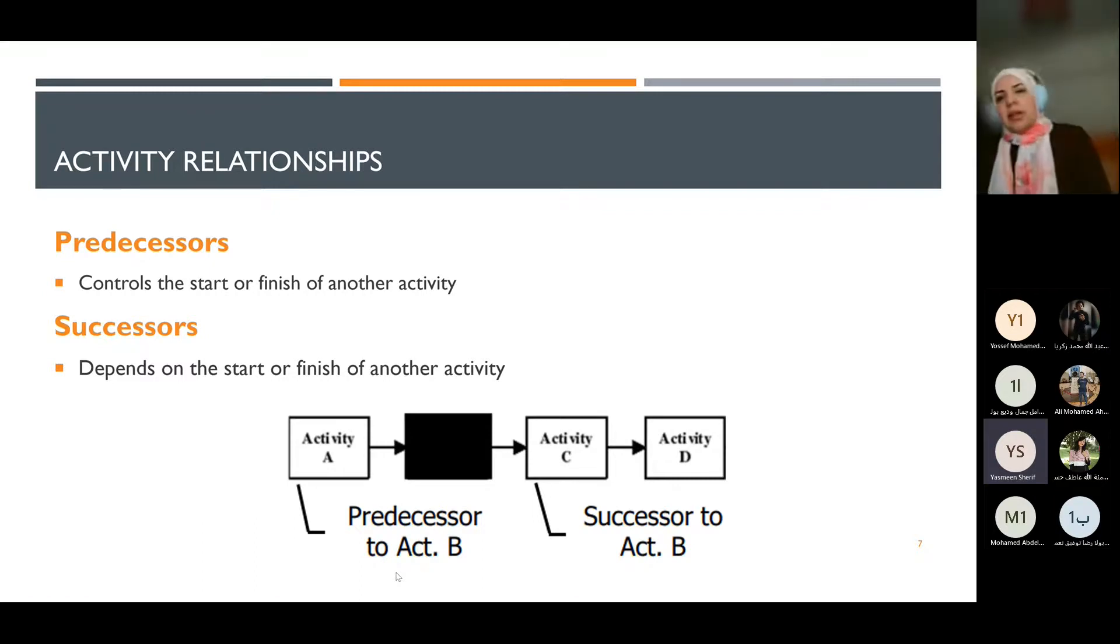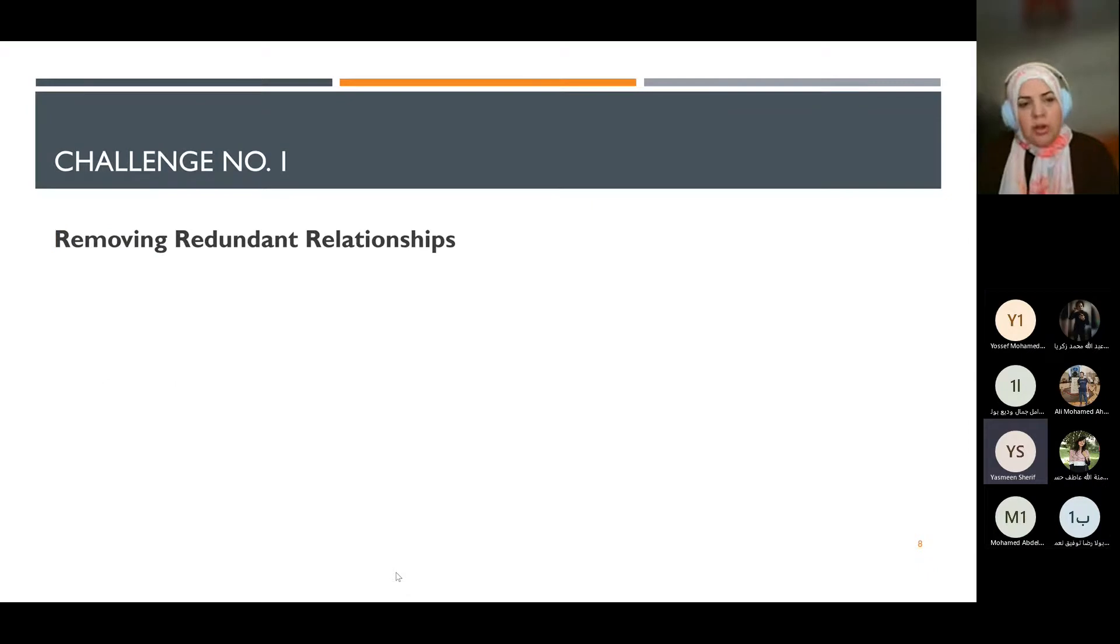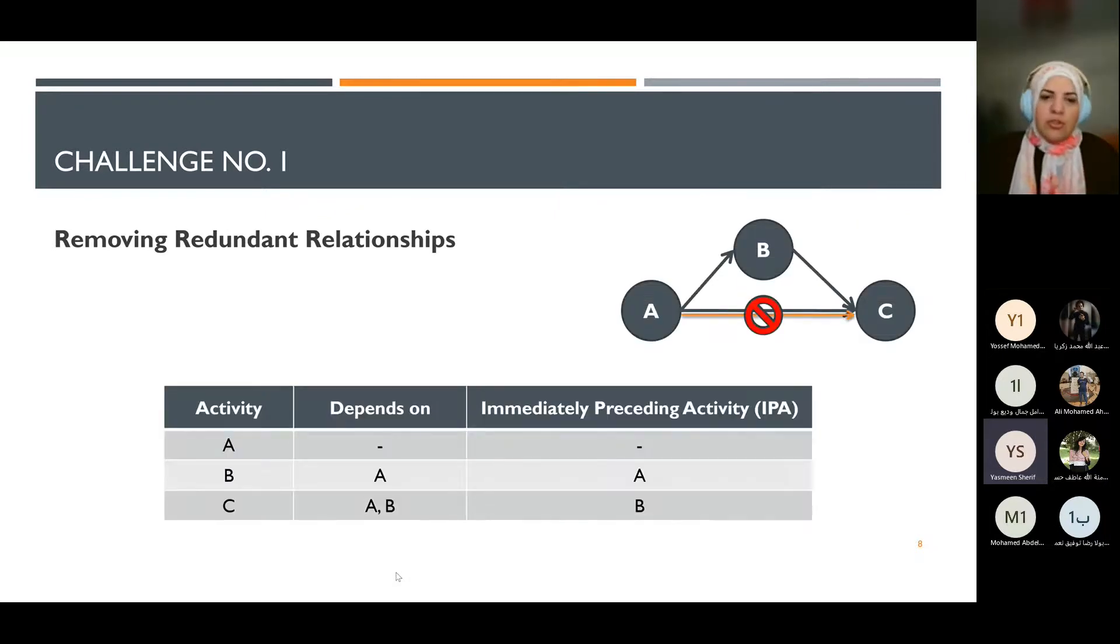We look at whether there is any redundancy in the relationships and determine what we call the IPA, or immediately preceding activities. After finishing this, we have a list of activities with their corresponding IPA. With the list of activities and relationships complete, we need to better understand the project structure.